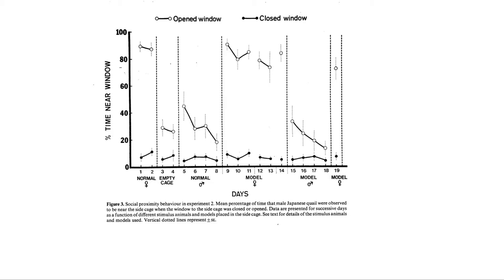The next panel is pretty interesting because we put a taxidermically prepared female on the other side — she doesn't move like a live bird, doesn't smell like a live bird, doesn't vocalize like a live bird. We weren't very good at our taxidermy, so she's not a very pretty female. Nevertheless, the male is over there all the time. If you put a taxidermic male over there, he's not very interested. So this tells us that just the visual features of the female are what makes her attractive — not her calls, not her movements, just visual features.